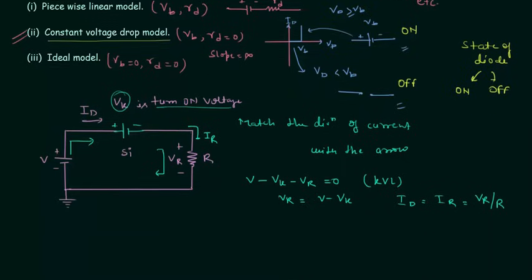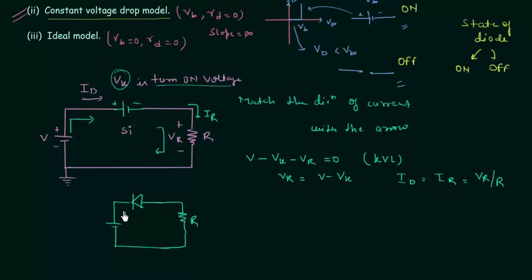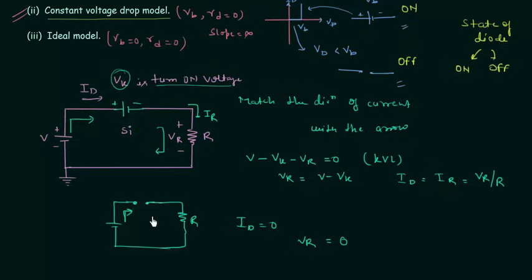What if I reverse the position of the PN junction diode? With the diode reversed, the direction of current does not match the arrow in the diode symbol. So the diode is off, and we replace it with an open circuit. Current Id is simply equal to 0 because the circuit is open, and Vr is also equal to 0 because there is no current in this circuit.